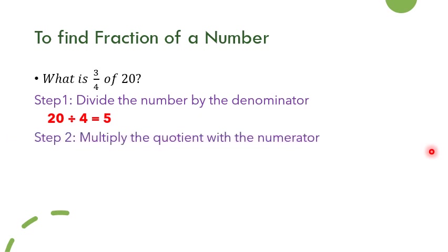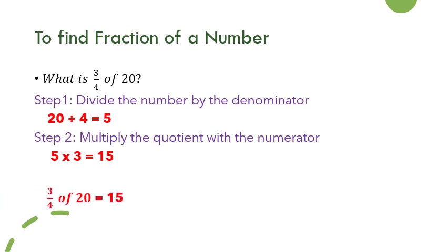Once we divide 20 by 4, since 4 fives are 20, we get the quotient as 5. In step 2, we multiply the quotient with the numerator. The quotient obtained in step 1 is multiplied with the numerator: 5 multiplied by 3 gives us 15. So 3 by 4 of 20 is equal to 15. First step: divide the number by the denominator. Second step: multiply the quotient with the numerator.